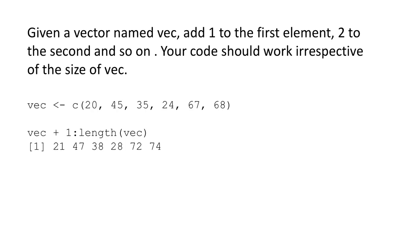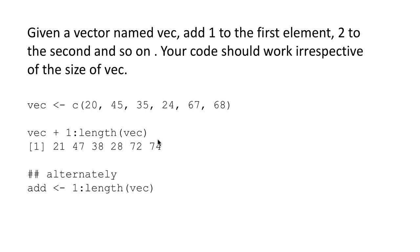This is something we could do in smaller steps. For example, we can say add, which is how much to add, is 1 colon length of vec, which is just doing this part separately, and then we can say vec plus add. If you want to assign the result to the same vector or a different vector, just put that on the left-hand side with the assignment operator. As of now we are not putting the result in any variable, we are just printing it out.